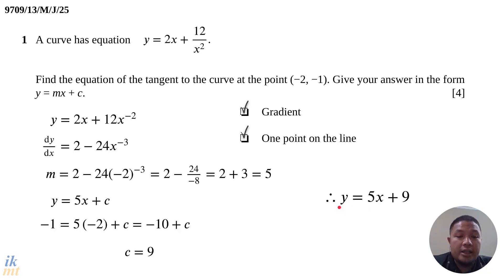And this is the equation of the tangent to the curve at point (-2, -1). So if you do get this answer, if you do get y = 5x + 9 as your answer, then you have done a good job.